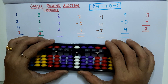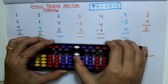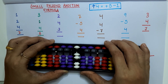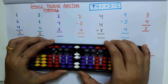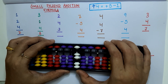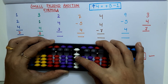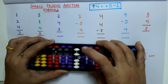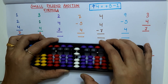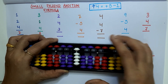Let's see the third example: 2 plus 4 plus 3. For 2 plus 4, we don't have 4 bits available at the lower deck, so we apply plus 5 minus 1, then plus 3. The answer is 9.